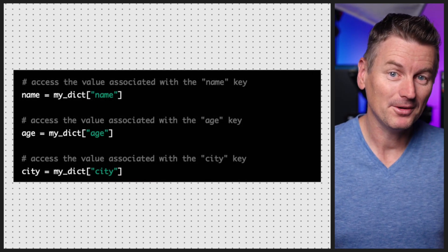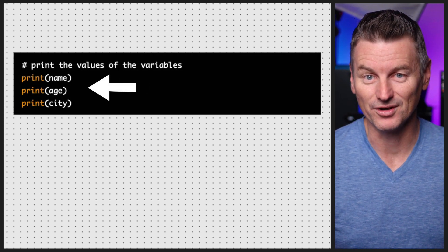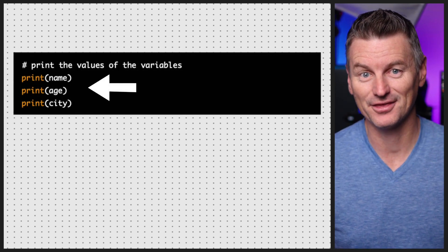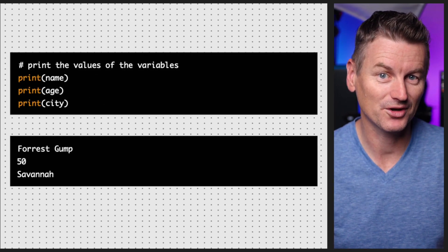If you want to see the output, you can add some print statements to the code, and that would output our dictionary to the console.